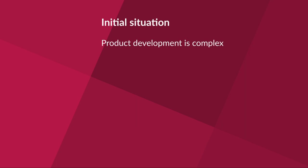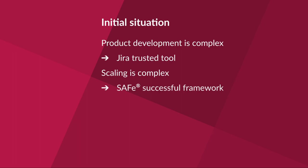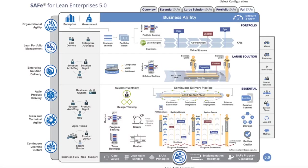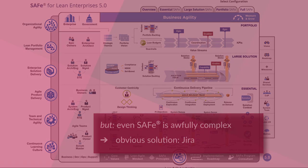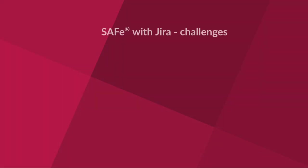So why would you want Agile Hive at all? We all know product development to be very complex, so Jira comes along as a trusted tool. When it comes to scaling it gets even more complex, so there is SAFe now as a very successful framework. But when you look at SAFe, you know it's also very, very complex. One obvious solution would be to use Jira again, but when trying to do SAFe with Jira, you usually run into at least one of these common challenges.